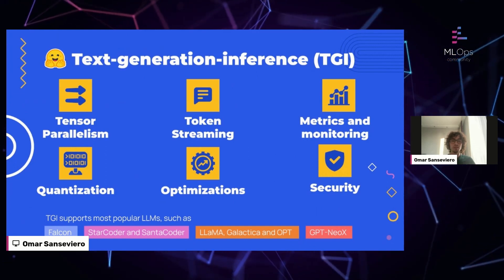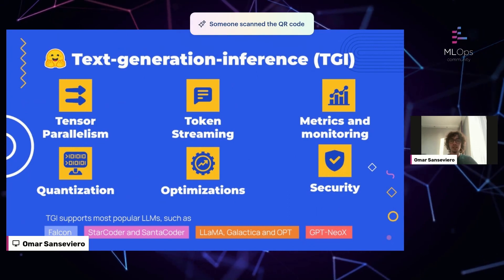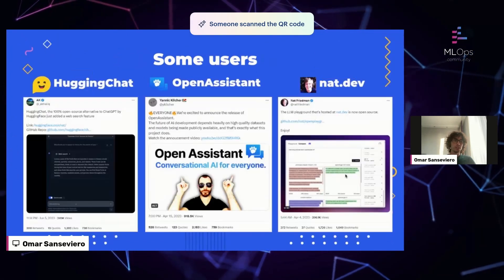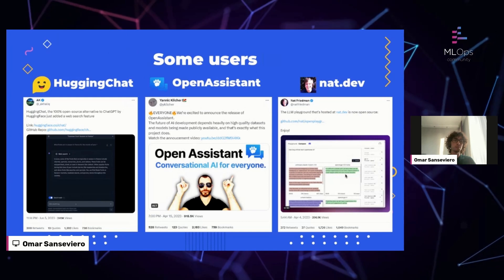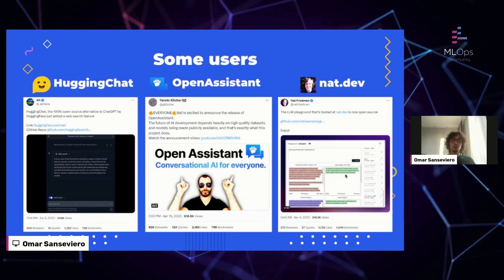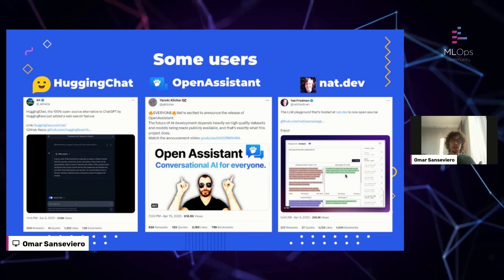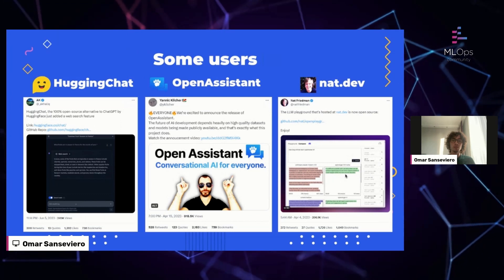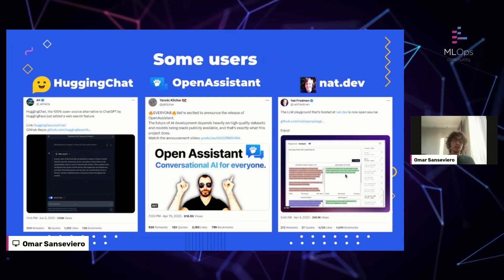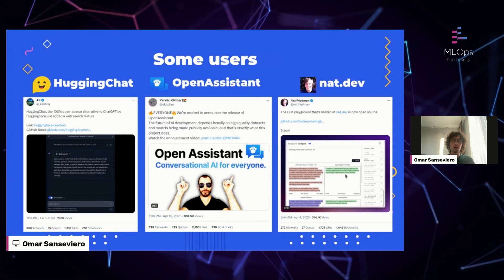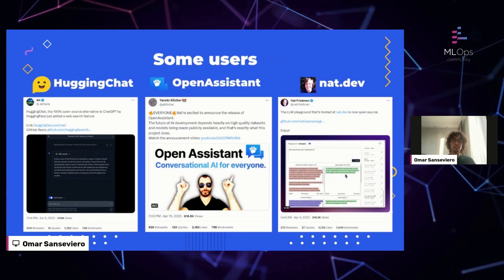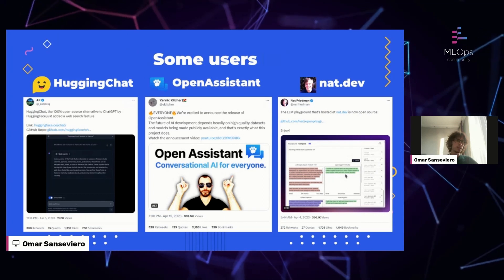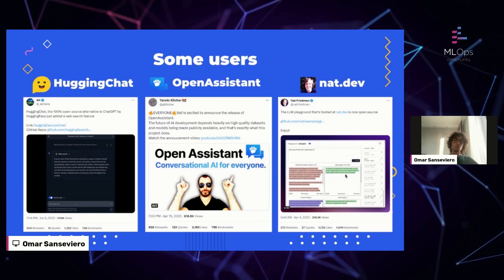Text Generation Inference also includes metrics monitoring, quantization with bits and bytes, flash attention for fast attention mechanisms, and many other optimizations. This tool is currently being used in several places in the open-source ecosystem: there is Open In Chat, an open-source UI for open-source LLMs; Open Assistant, a reproduction effort for very large LLMs; and Nat Friedman launched an LLM playground. All of these are powered by Text Generation Inference — it has been battle-tested and is a fully free, open-source tool.